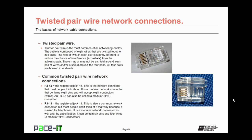The other common twisted pair network connector is the RJ11 — the Registered Jack 11. This is also a common network connector, but most people don't think of it that way because it's used for telephones. It is a modular network connector that contains six pins and four wires — a modular 6P4C connector.